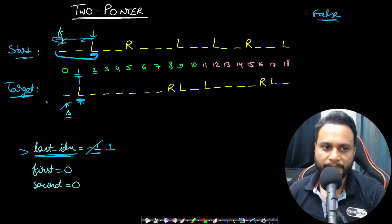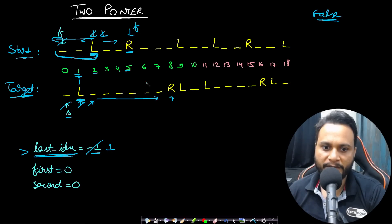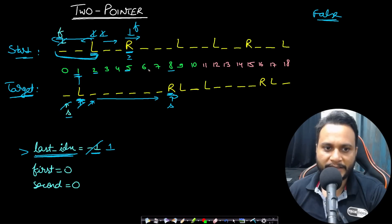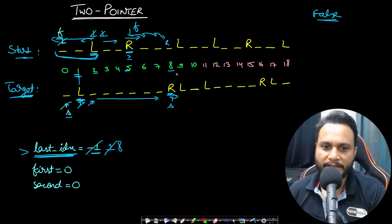We do first++ and second++, skip all spaces again. Now first points to R at index 5 and second points to R at index 8. The characters match. Since it is R, the target's R must be at an index greater than or equal to the R in start — 8 is greater than or equal to 5, so it is fine. We can move this R to index 8. We update last index to 8.